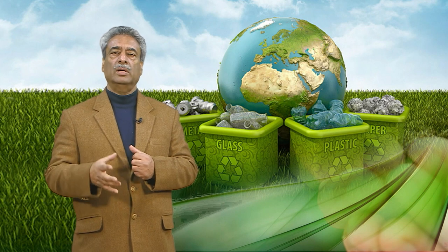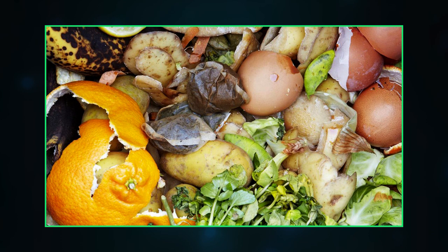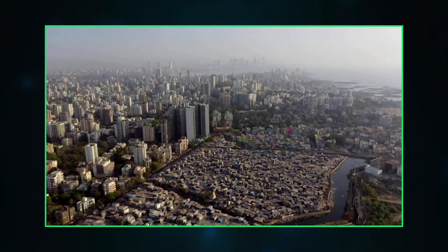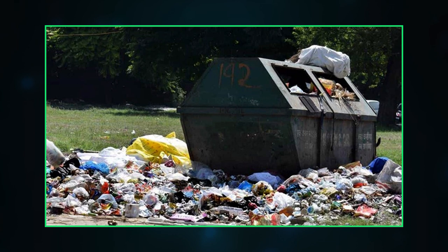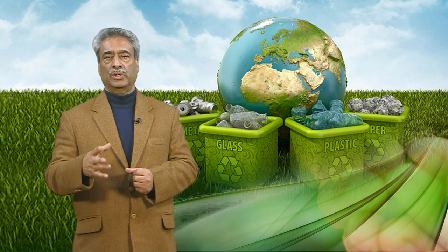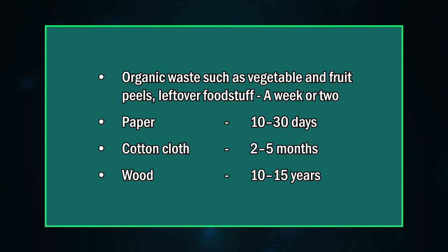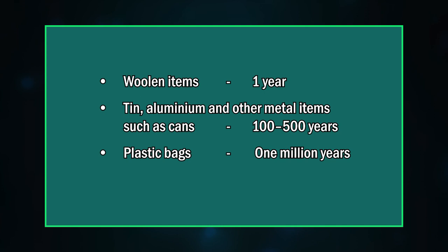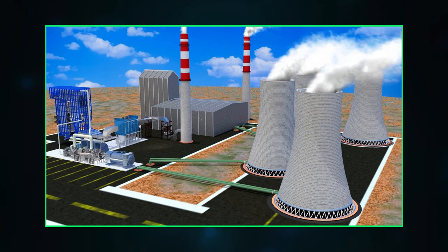In India, the biodegradable portion dominates the bulk of municipal solid waste, mainly due to food and yard waste. There are different categories of waste, each taking their own time to degenerate. For example: organic waste such as vegetable and fruit peels and leftover foodstuff — one to two weeks; paper — 10 to 30 days; cotton cloth — 2 to 5 months; wood — 10 to 15 years; woolen items — 1 year; tin, aluminum, and other metal items such as cans — 100 to 500 years; plastic bags — 1 million years.